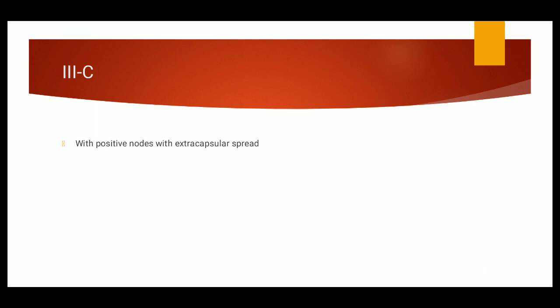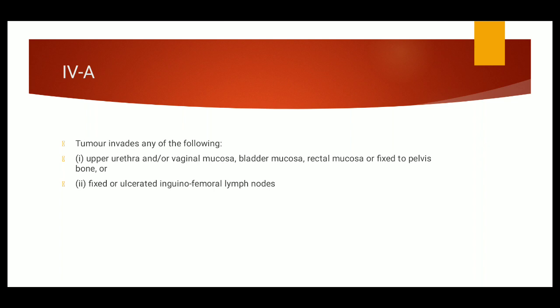Now coming to Stage 4, the advanced stage. What happens in Stage 4? Tumor invades other regions like two-thirds of upper urethra, two-thirds of vagina, or distant structures. What happens in Stage 4a? In Stage 4a, tumor invades any of the structures: upper urethra and vagina, mucosa of the bladder, rectal mucosa, or fixed pelvic bone, or the fixed ulcerated inguinofemoral lymph nodes. If these are involved in Stage 4a, Stage 4b is the advanced stage as compared to Stage 4a.